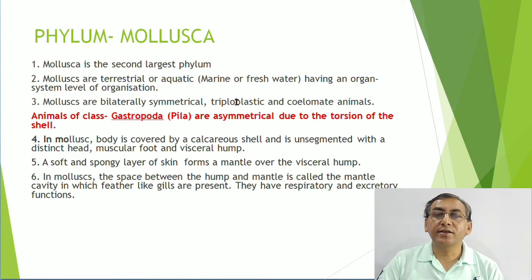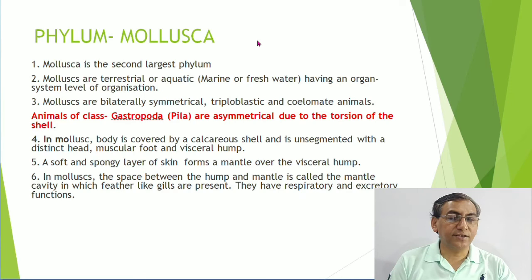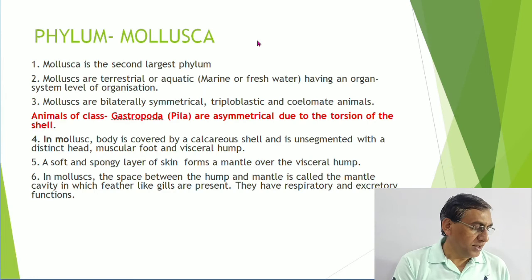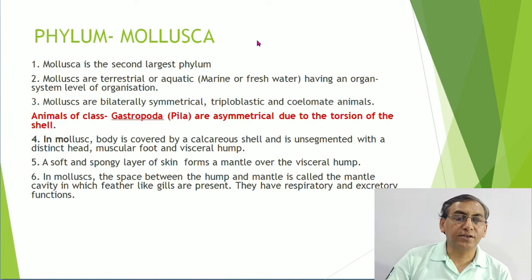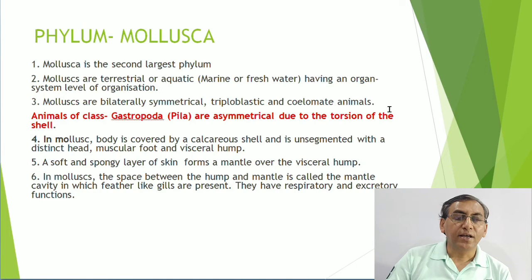Now we come to phylum Mollusca. Mollusca is the second largest phylum of the animal kingdom - first largest is Arthropoda, second largest is Mollusca. Mollusca may be terrestrial or aquatic - living in marine or fresh water. They have organ system level of organization, are bilaterally symmetrical, triploblastic, and eucoelomate. One class, Gastropoda - example Pila - is asymmetrical due to torsion of the shell.